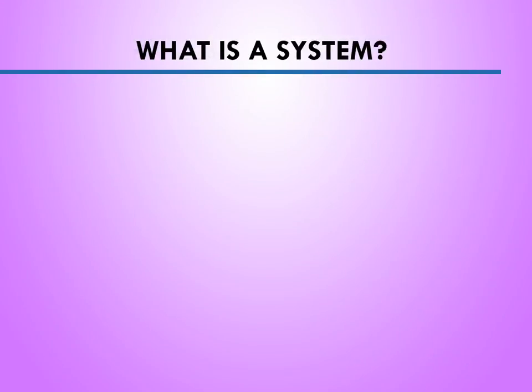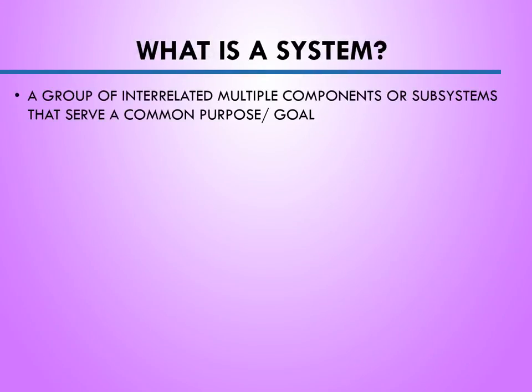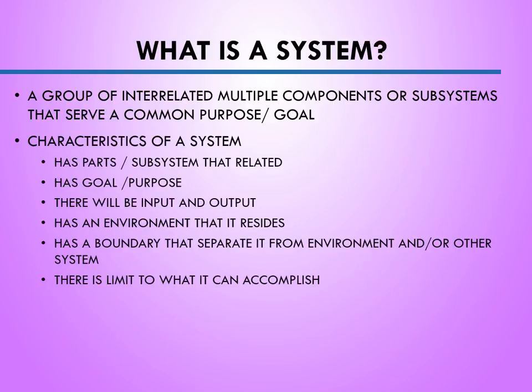First of all, what is a system? A system is a group of interrelated multiple components or subsystems that serve a common purpose or goal. Every system has parts or subsystems that are related to each other and has a goal and a purpose.